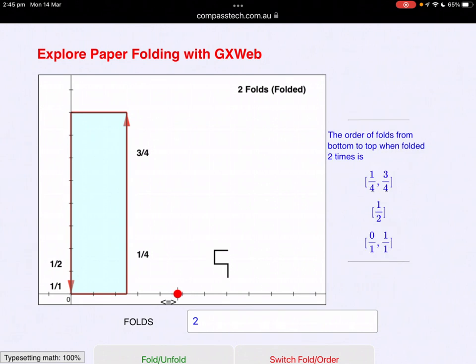Fold a second time. The half fold has now moved to the left and at the right-hand side at the fold, 1/4 and 3/4.